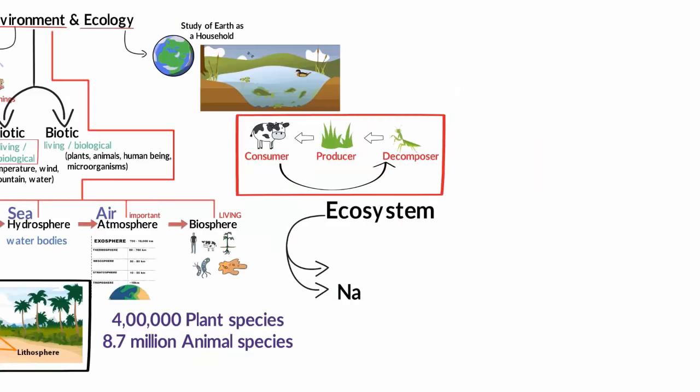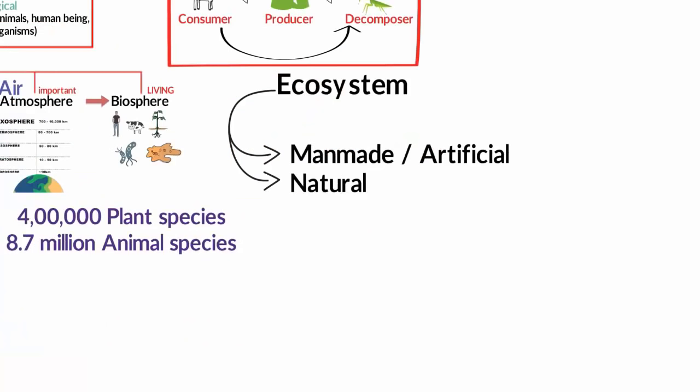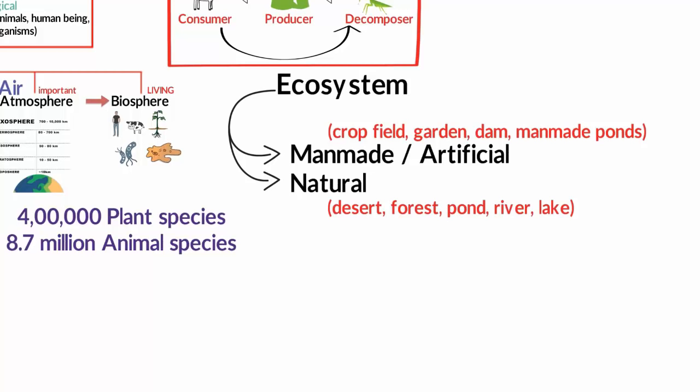Now ecosystems can be both natural and man-made. So examples of natural ecosystems are desert, forest, or any aquatic place like a pond, river, or lake. And examples of man-made ecosystems can be crop fields or gardens, then aquariums, dams, and man-made ponds. The natural ecosystem is further divided into two types: aquatic ecosystem and terrestrial ecosystem. Under aquatic we have the lake, wetland, river, oceans, and under terrestrial ecosystem we have forest, then grassland, then deserts, etc.